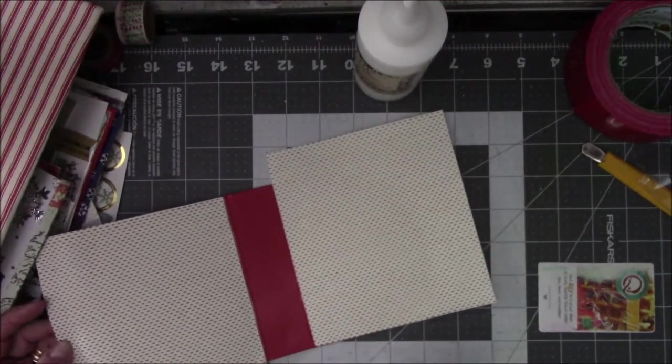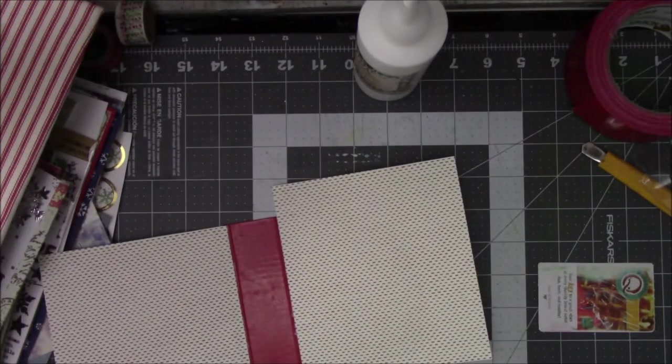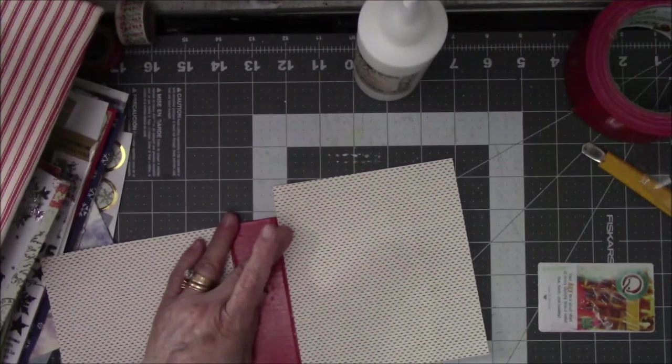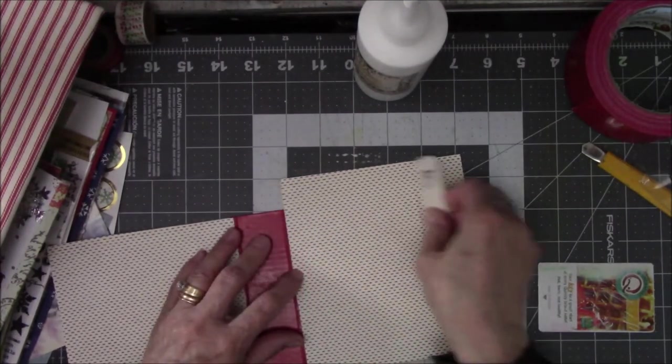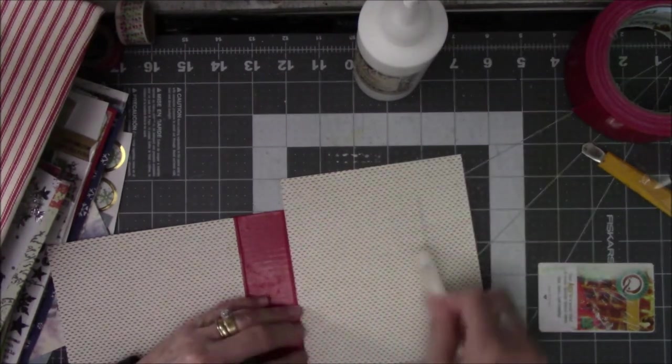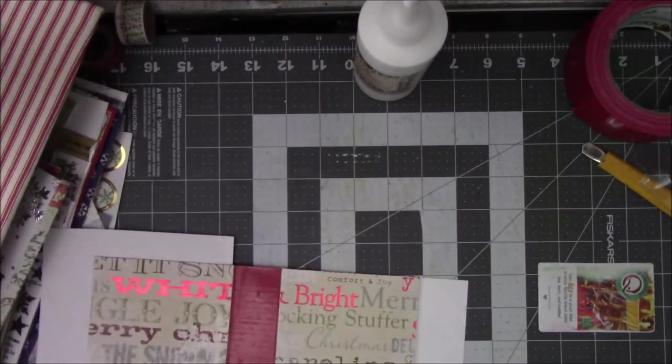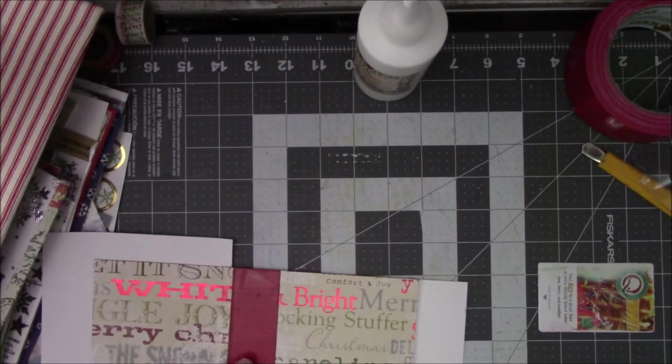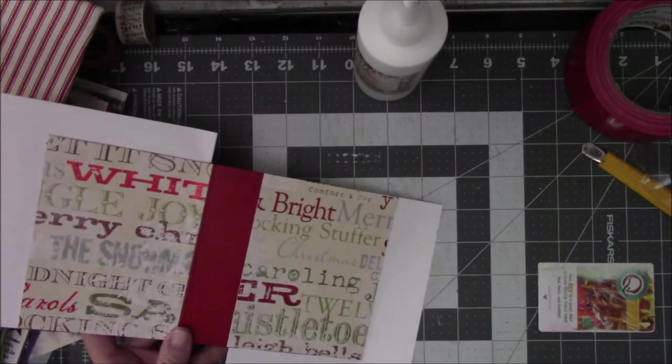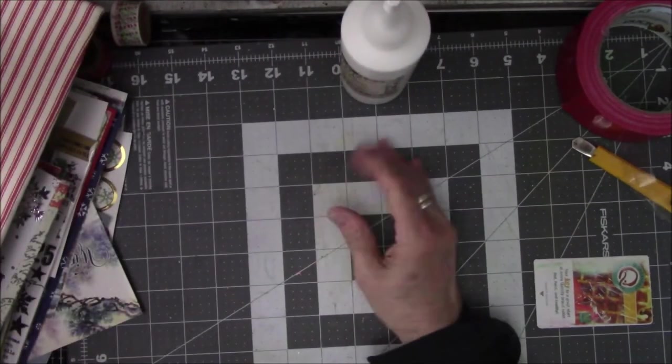You know, I just set the bone folder down. What'd I do with it? Holy moly. Okay. Well, I don't see it. Oh, here it is. White table, semi-white bone folder amongst white paper. And just smooth it to the outsides. And there's the glue that's squeezed out. Lovely. I'm not unhappy about that.